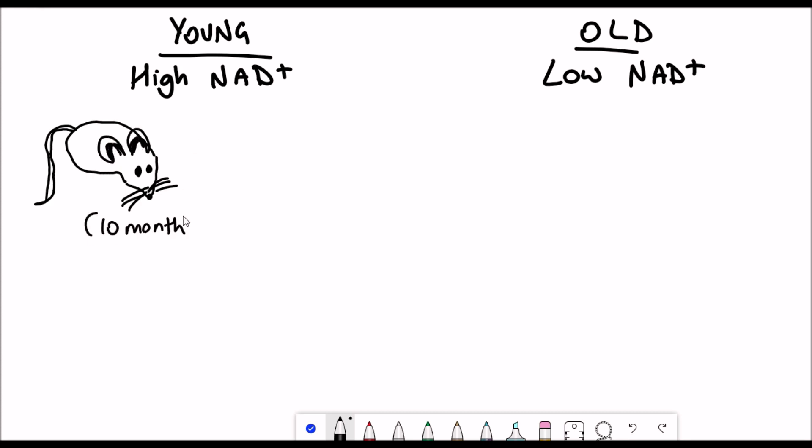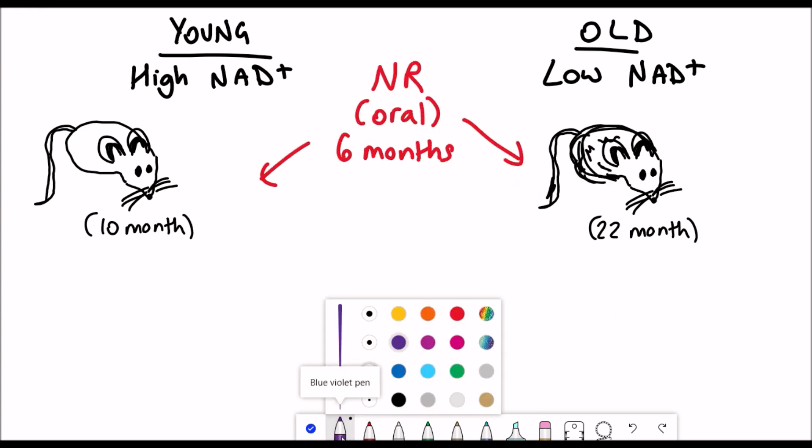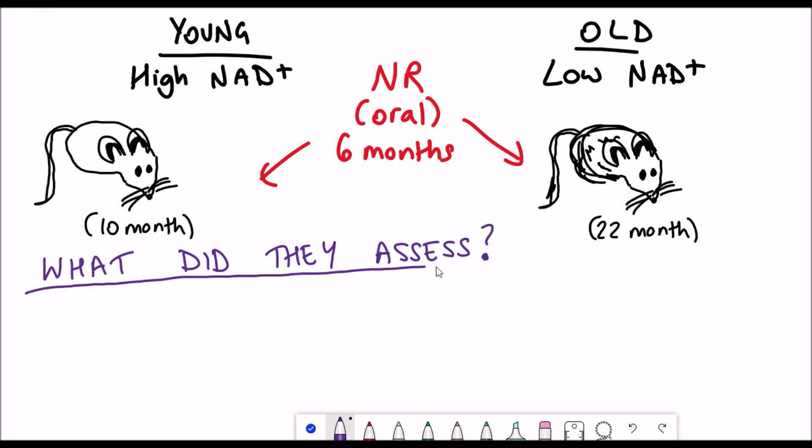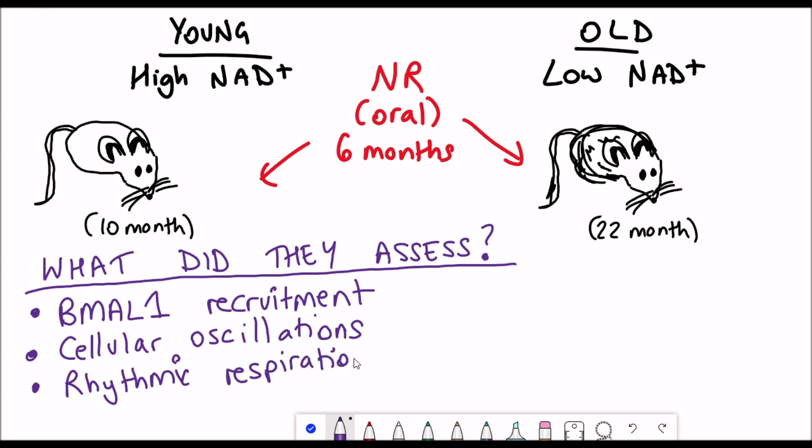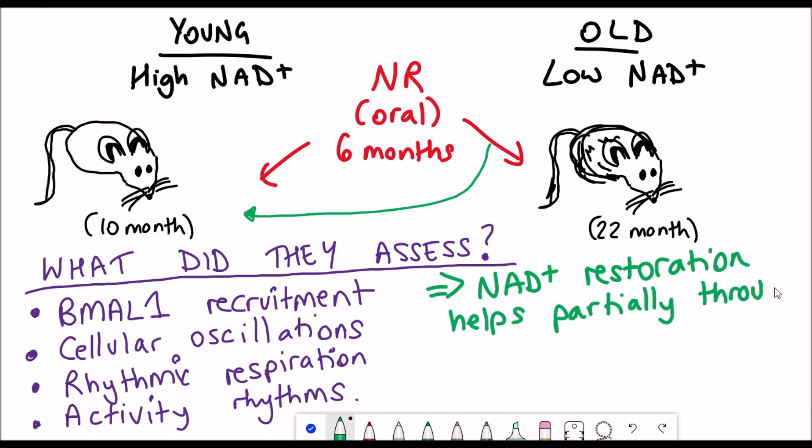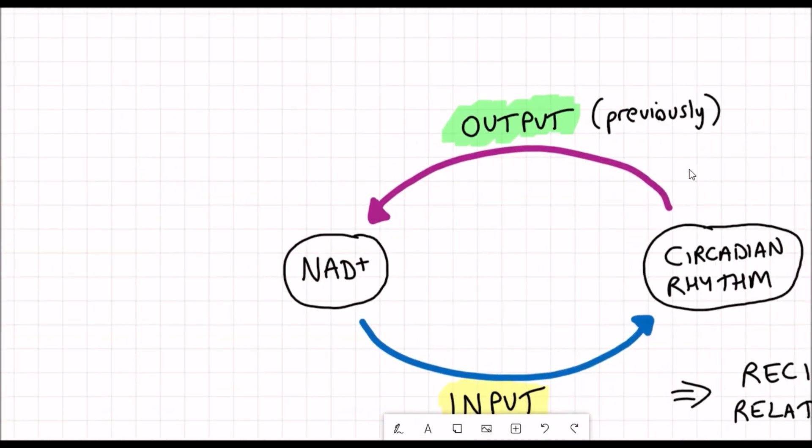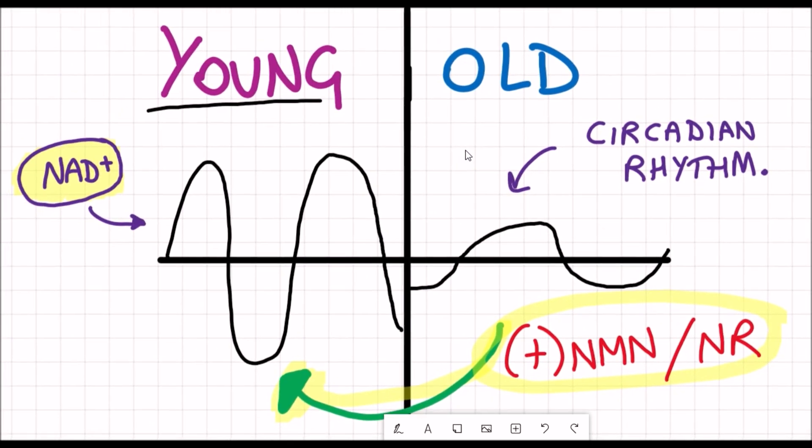In young mice, they have higher NAD+ levels than in older mice. The young mice were 10 months old, the old mice were 22 months old. Both groups were given oral NR for six months. They assessed a number of different qualities, such as the BMAL1 recruitment, cellular oscillations, rhythmic respiration, and they looked at their activity patterns as well. Compared to the young mice, the old mice with the addition of nicotinamide riboside were able to improve all of the qualities that they assessed, matching similar levels to the young mice. So this paper effectively showed that in mice, part of the benefit from NAD+ restoration comes from improving the robustness of the circadian rhythm.